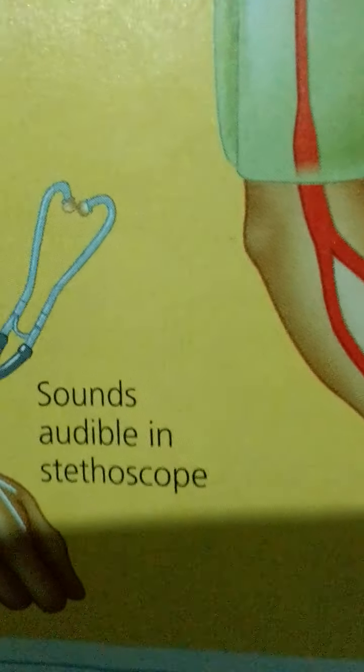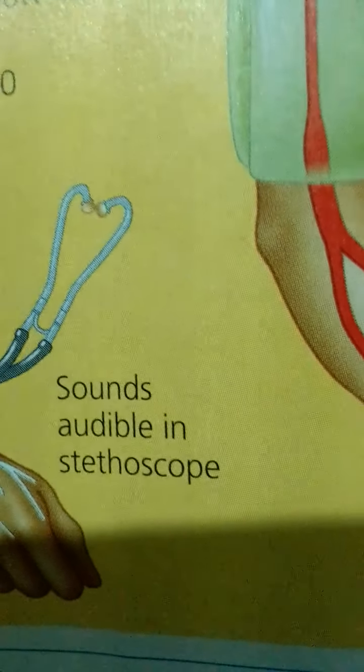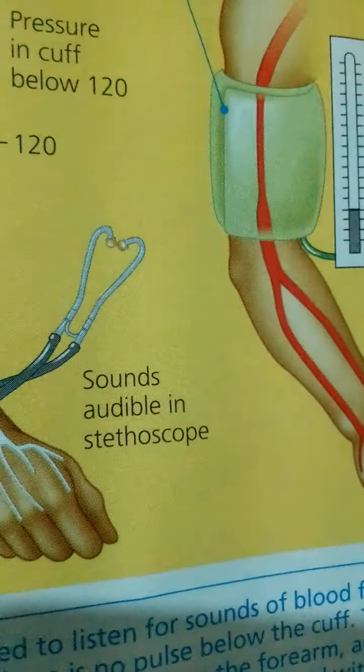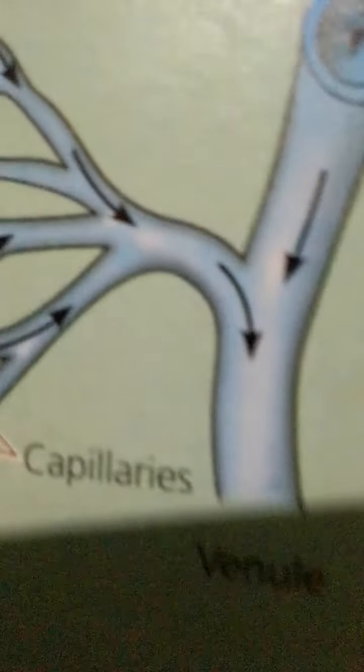In the other mechanism, rings of smooth muscle called pre-capillary sphincters, because they are located at the entrance to capillary beds, control the flow of blood between arterioles and venules. Notice this figure for a closer look.